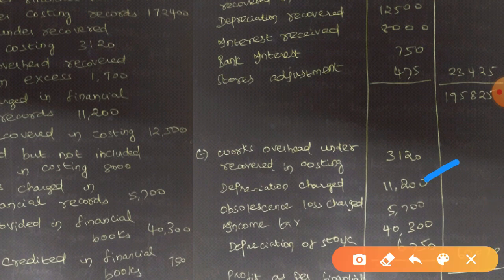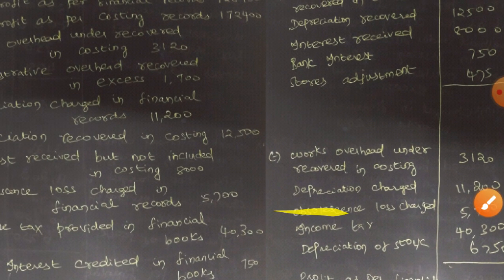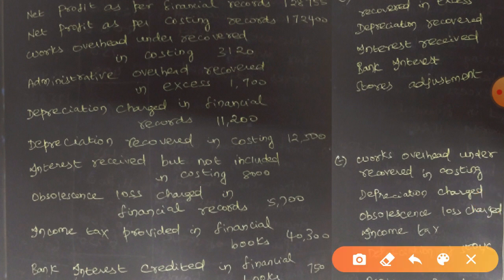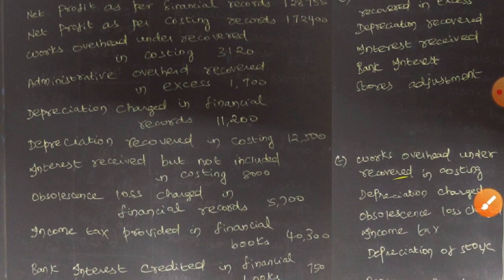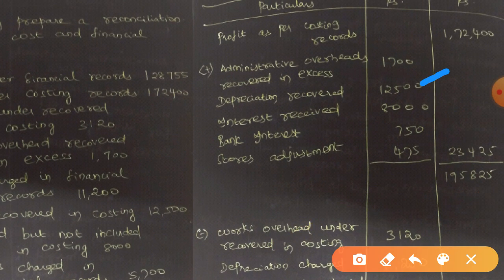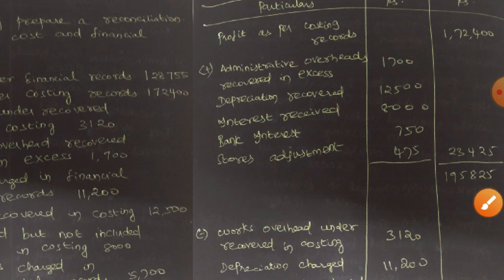Moving on to depreciation recovered in costing: 12,500. Recovered means we are receiving the amount — it is a kind of income. When you are generating income, it is a positive element. So depreciation recovered — 12,500 — is shown on the positive side.